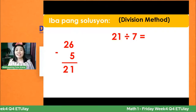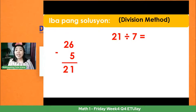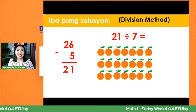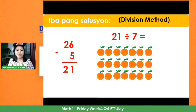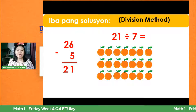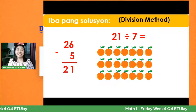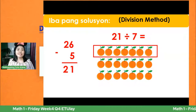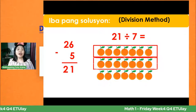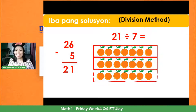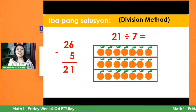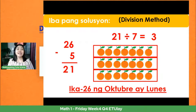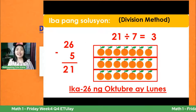I-divide na natin yung 21 sa 7. Bakit 7? Kasi yun ang bilang ng isang linggo — 7 araw sa isang linggo. Gumamit ako dito ng pictures — ito ay 21 na oranges. Ilang 7 mayroon sa 21? Tignan natin: 1, 2, 3, 4, 5, 6, 7 — isa. 1, 2, 3, 4, 5, 6, 7 — dalawa. 1, 2, 3, 4, 5, 6, 7 — tatlo. Mayroon tayong tatlong pito sa 21. Ibig sabihin, ang sagot natin ay tatlo. Ang ikadalawampu't anim ng Oktubre ay papatak sa Lunes.